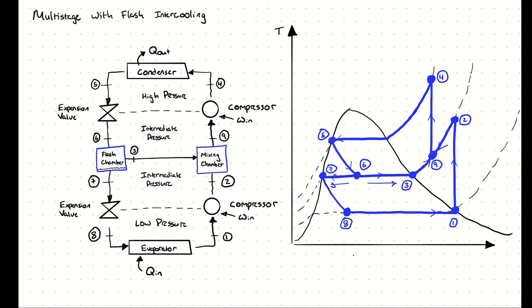And that's our multi-stage vapor compression refrigeration cycle with flash intercooling. For more context, let's try an example problem.